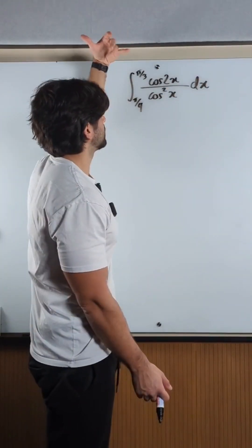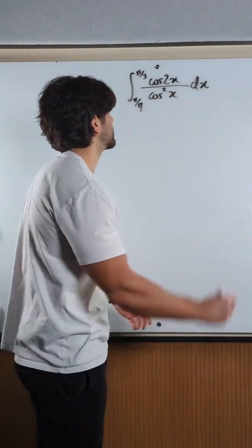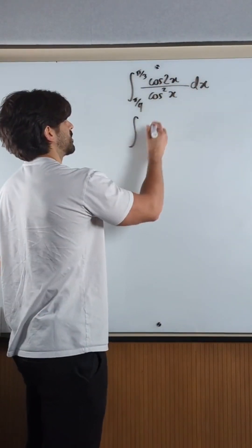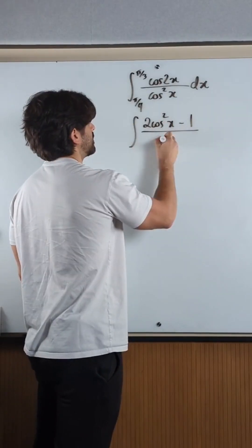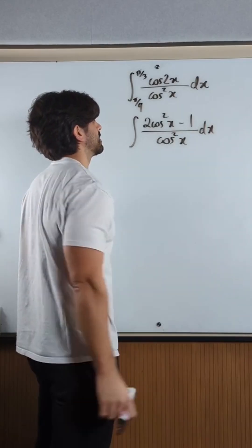Now you have loads of options. Why don't we just rewrite cos²x using the double angle ID that involves cos only. So, 2cos²x minus 1 over cos²x dx. I'll do the limits later.